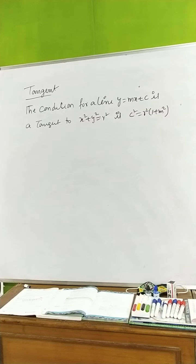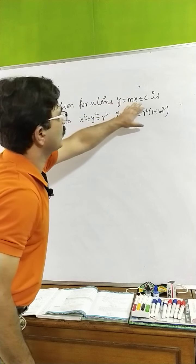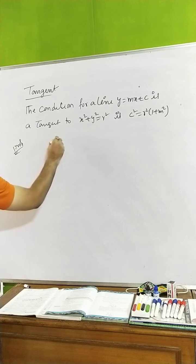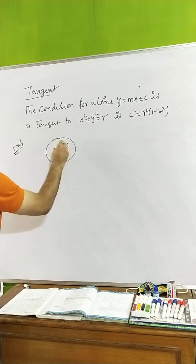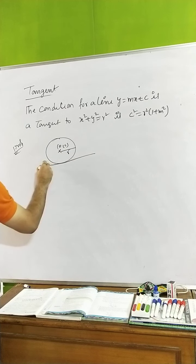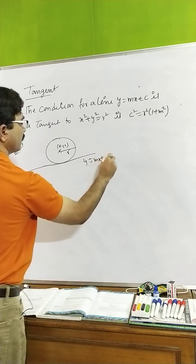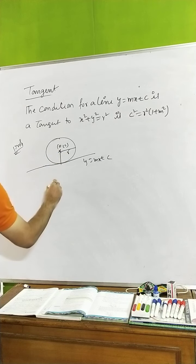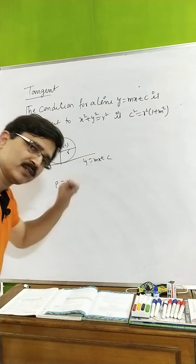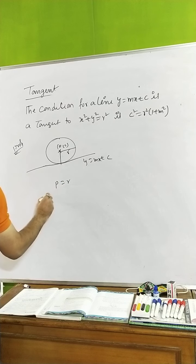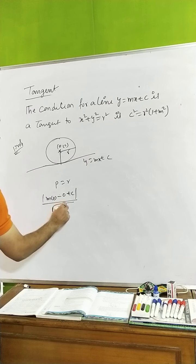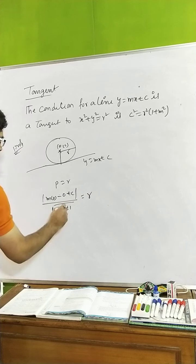Now the condition for the line y = mx + c to be a tangent to the circle: consider a circle with center (0,0) and radius r. If this line is a tangent, then the perpendicular distance from center to the line equals r. That perpendicular distance p = |c| / √(1 + m²) = r, so c² = r²(1 + m²).